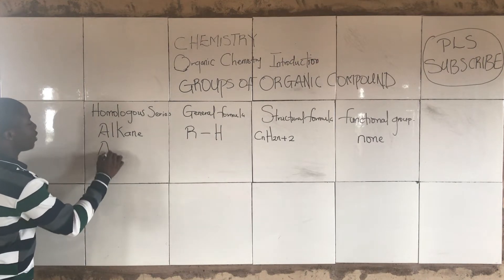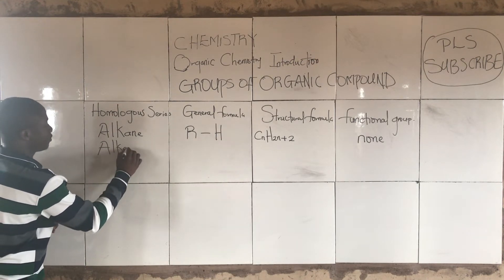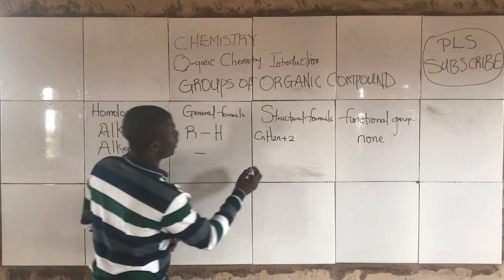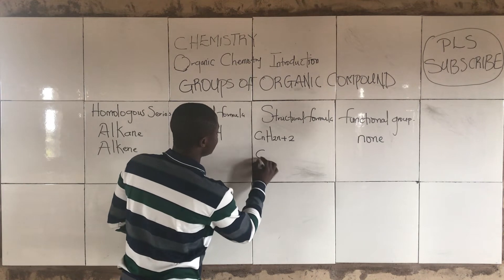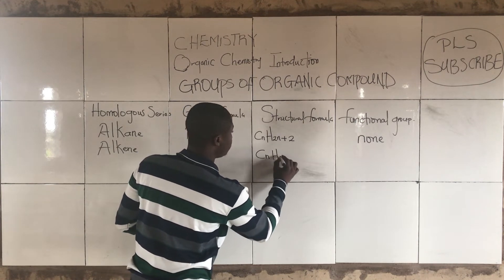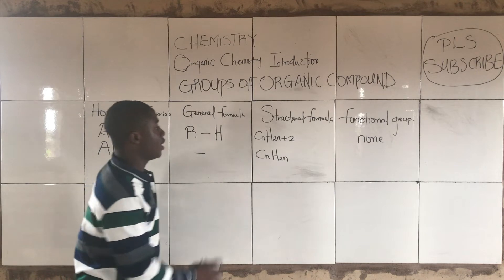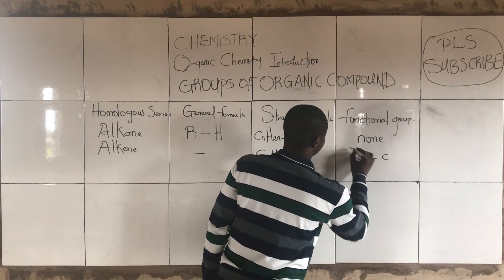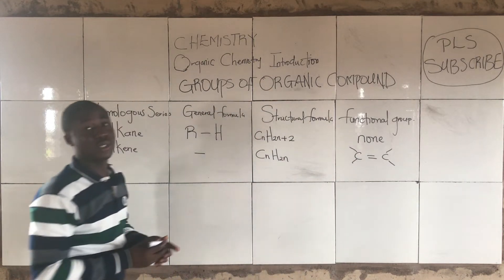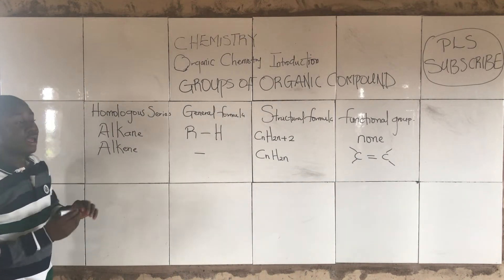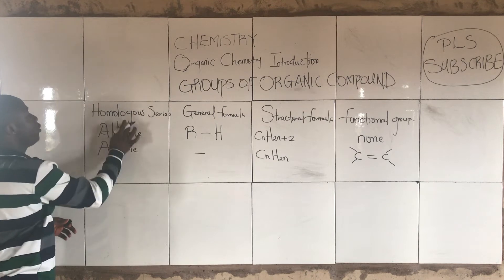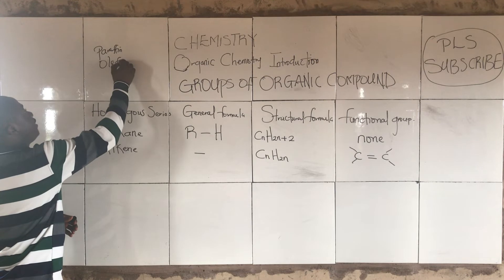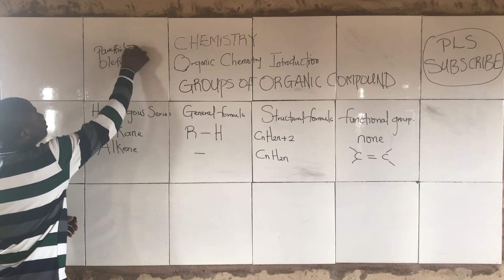The next homologous series is alkenes. Alkenes have the general formula CₙH₂ₙ, and their functional group corresponds to CₙH₂ₙ. Alkenes are compounds with double bonds. Alkanes are basically called paraffins and have single bonds, while alkenes have double bonds.